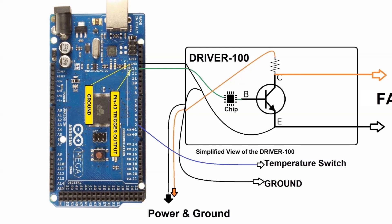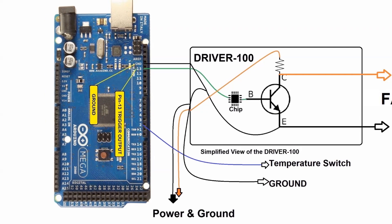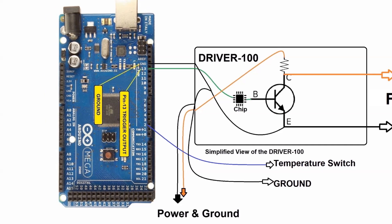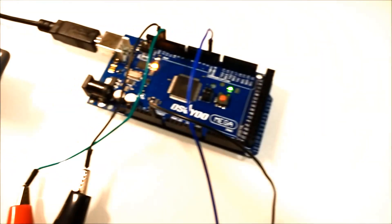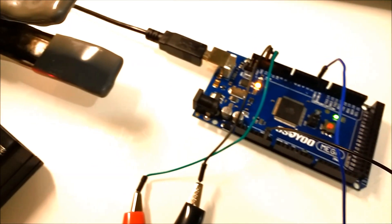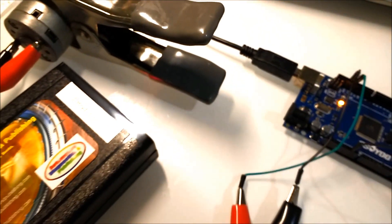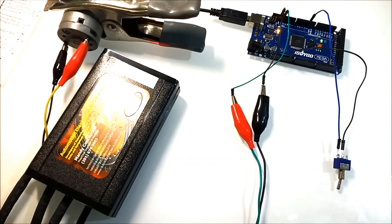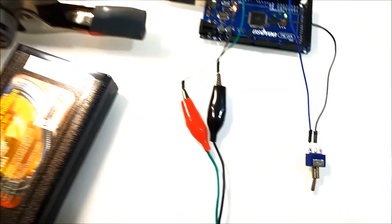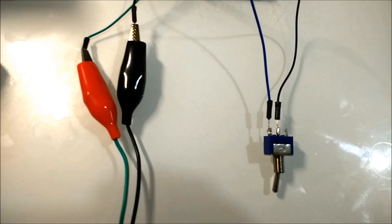This thing could control pretty much anything, and it is widely used in automotive applications. So here on screen, we can actually see the setup with the Arduino, the driver 100 board, and everything connected together. It's a very simple connection. What we're going to do is toggle the switch on and off, and it's just going to turn the motor on and off.